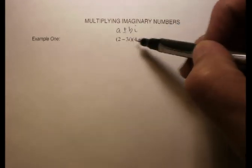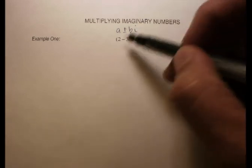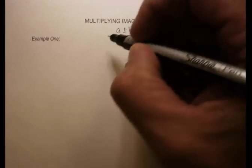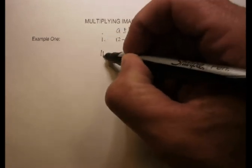Again, it's plus or minus depending on what the particular number is. So essentially, imaginary numbers look like a binomial, and you can multiply them like they were binomials, which is kind of fortunate.